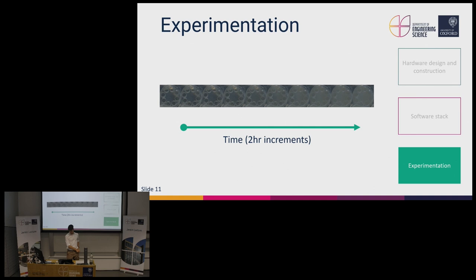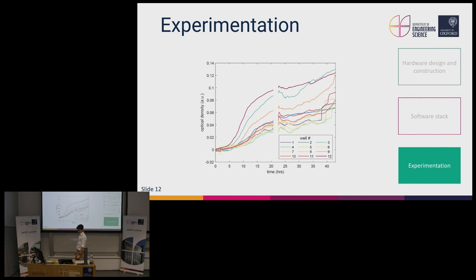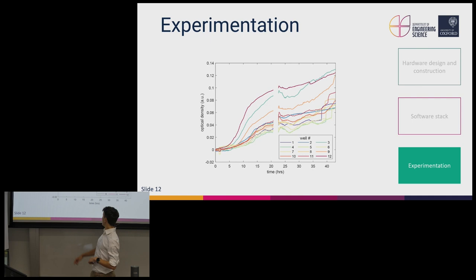This is an experiment I conducted showing growth in one chamber over 20 hours. Starting from the left you can see it begins very clear, then as time increases it becomes much more murky and turbid, indicative of E. coli growth. The software produces cell population size estimates for each well, and you can see that all cultures exhibit an exponential growth phase, which then saturates as resources become more limited.